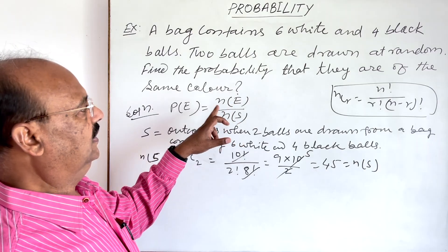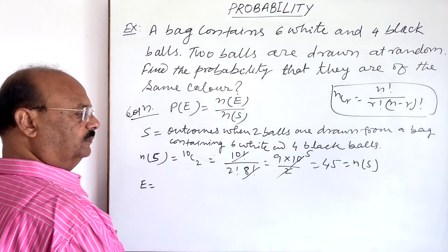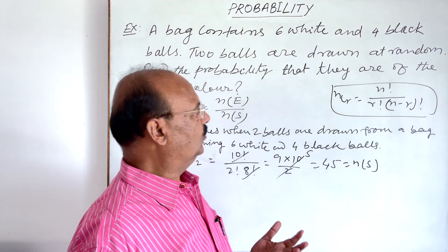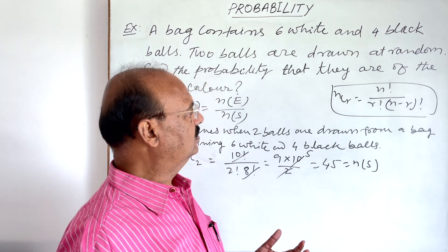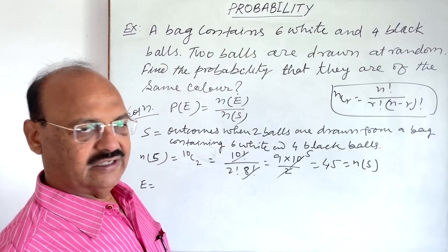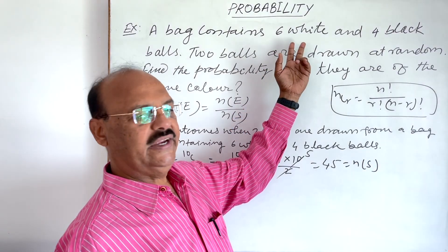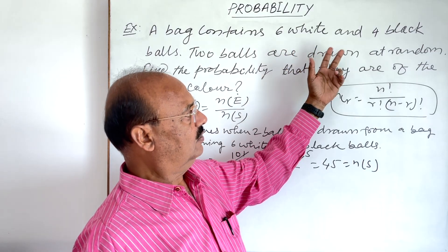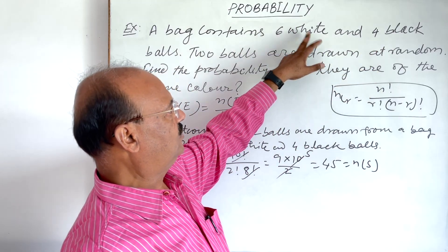Now we have to find out the value of n(E). What is the event E? There are two possibilities or two desired cases, two favorable cases here. Two balls drawn are from six white balls, or two balls are from four black balls.